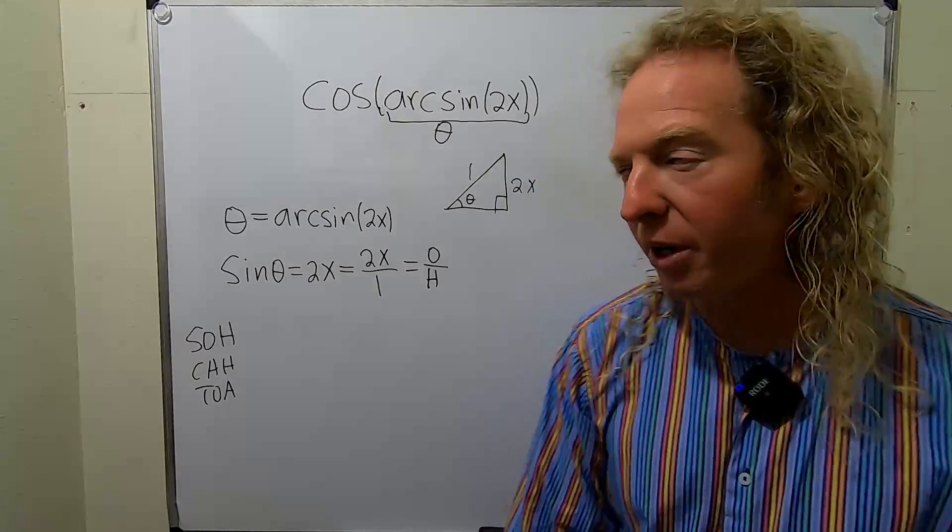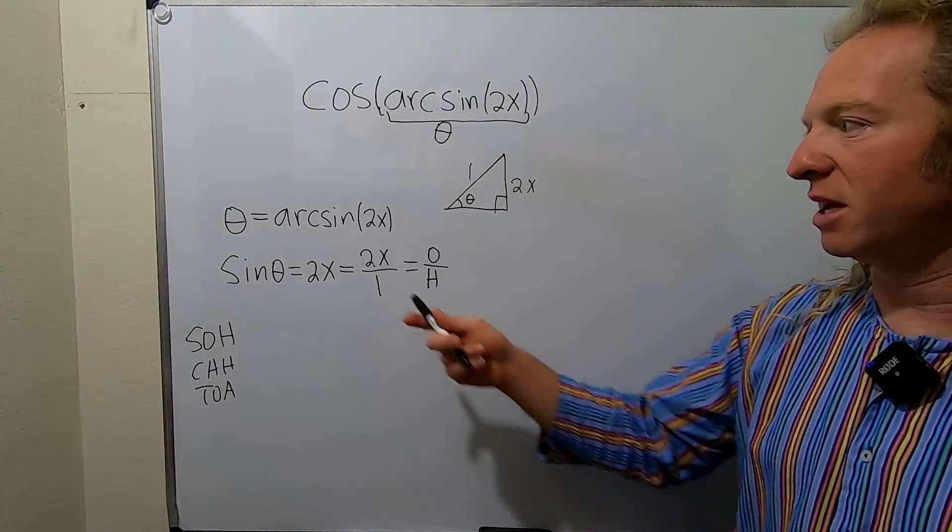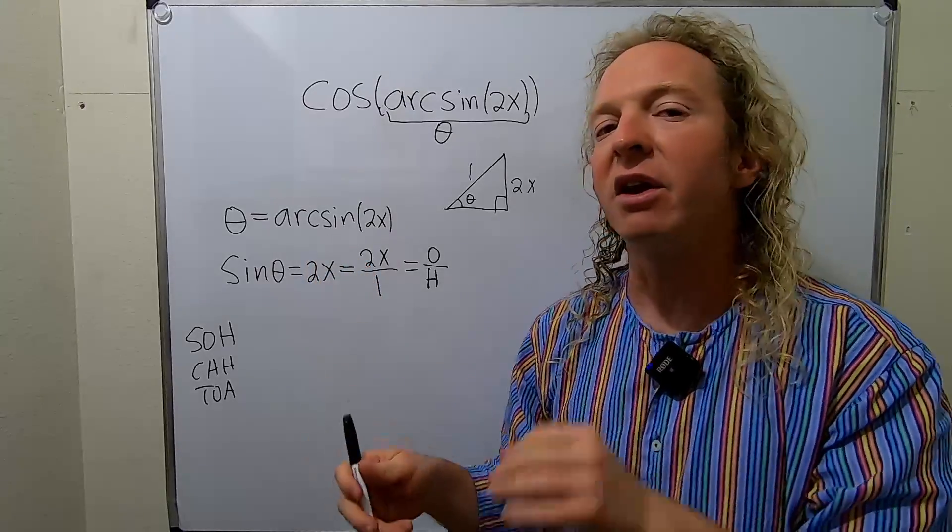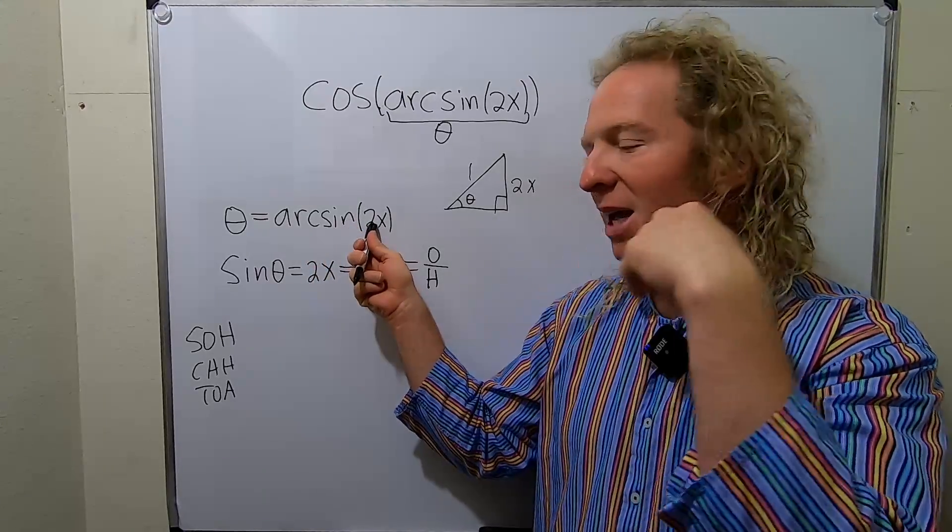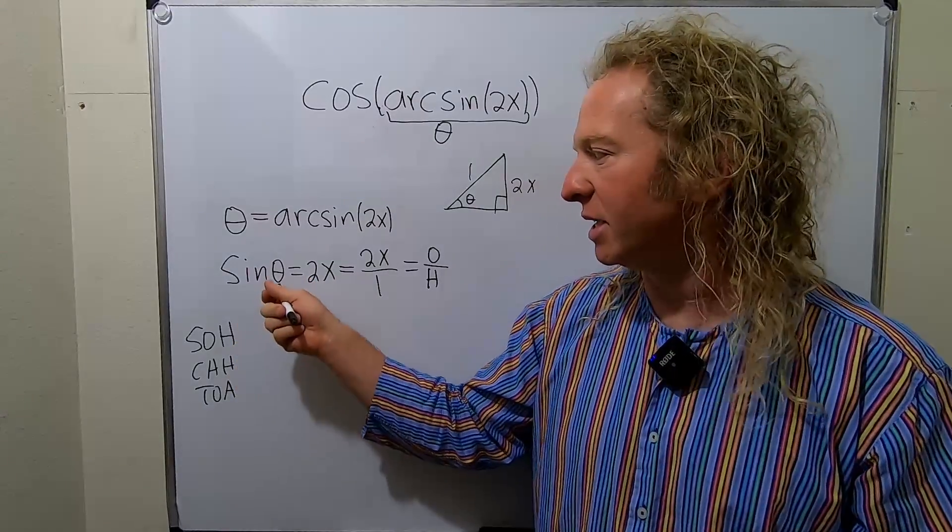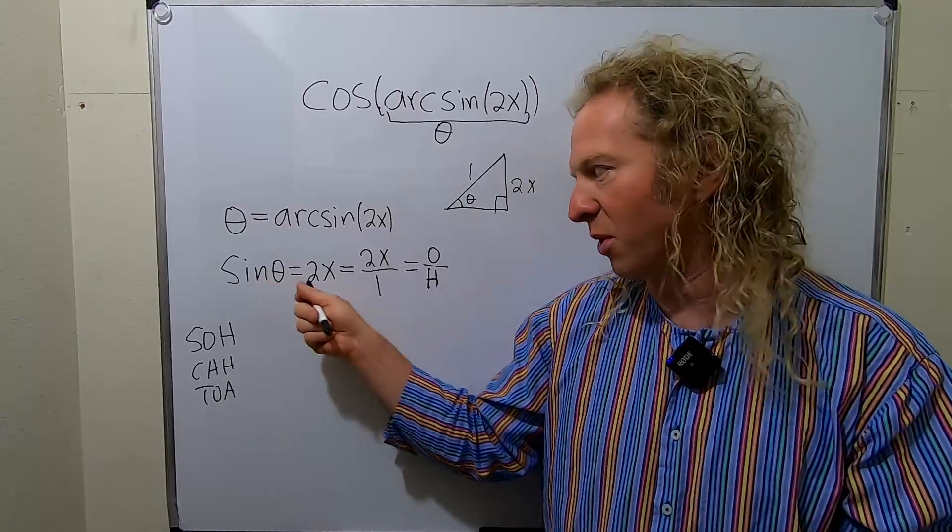So recap. Step 1, you call the inside piece theta. The next step is to use the fact that this is the inverse sine. The arc sine takes 2x and sends it to theta. So the sine function undoes that and takes theta and sends it back to 2x.